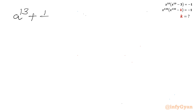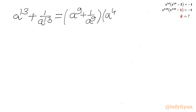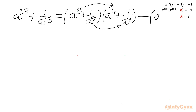I will use the formula for a^13 plus 1 over a^13, which expands as: (a^9 plus 1 over a^9) times (a^4 plus 1 over a^4) minus (a^5 plus 1 over a^5). This cross-multiplication gives us a^13 plus 1 over a^13. So we have to find out these three brackets.